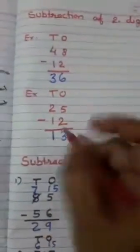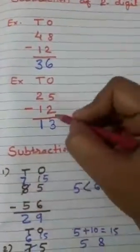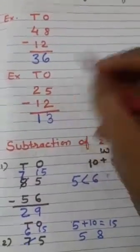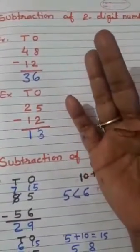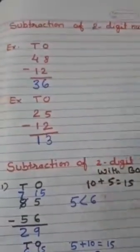Next example: 25 minus 12. Again, subtract 1s with 1s and 10s with 10s. So take out 5 fingers, minus 2. Count remaining fingers: 1, 2, 3. Write here 3.